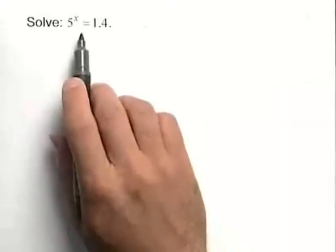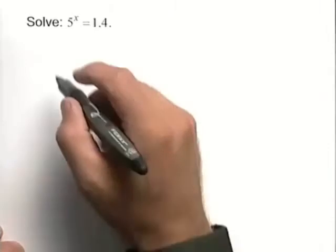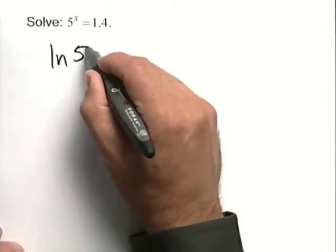Let's solve another exponential equation. We have 5 to the x is equal to 1.4. Since there's no way to write those bases as the same base, we're going to take the natural logarithm of both sides of our equation.